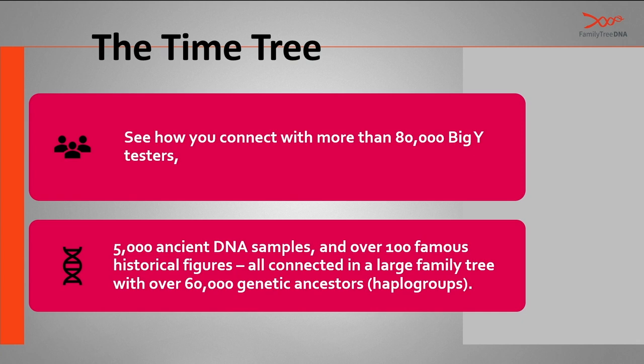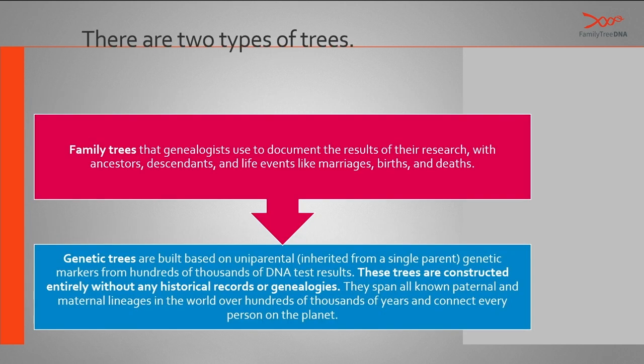Next we'll look at the time tree. Another tool we invented was the time tree. Initially customers only had the block tree to see how they were related. With this new Discover tool, we added on a new feature called a time tree, which actually allows you to see how you connect with more than 80,000 Big Y testers and over 5,000 ancient DNA samples from all over the world. In doing genealogy we always have family trees, but this is built strictly off genetic trees, solely based off DNA test results — constructed entirely without any historical records or genealogies.